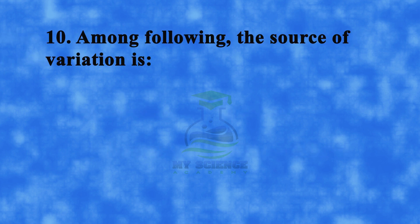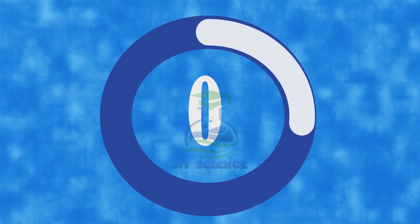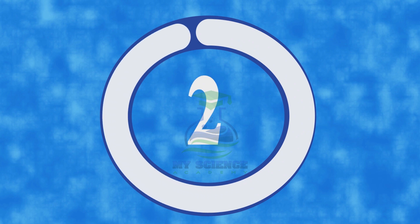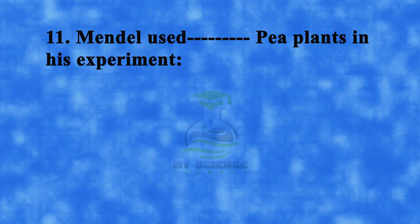Question 10: Among the following, the source of variation is — A. Mutation, B. Mitosis, C. Crossing over, or D. Both A and C. Correct answer is D. Both A and C.